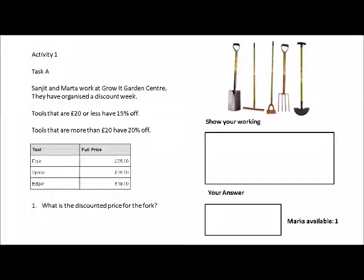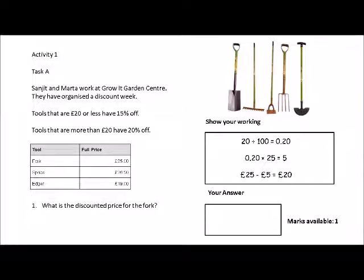So let's have a look at the answers. We divide the 20% by 100 to get 0.20. We times that 0.20 by 25, which gives us 5. Then we subtract that 5 from £25, which gives us £20. So the answer is £20 — 20% off of £25 is £20.